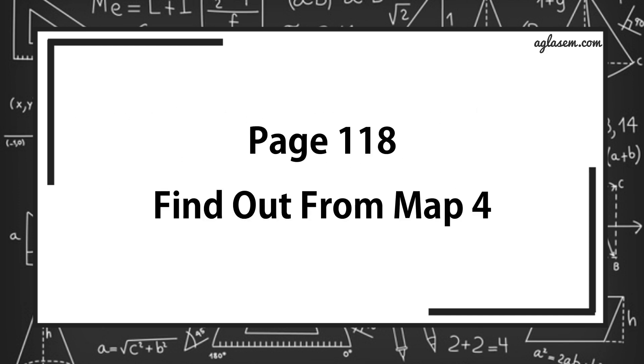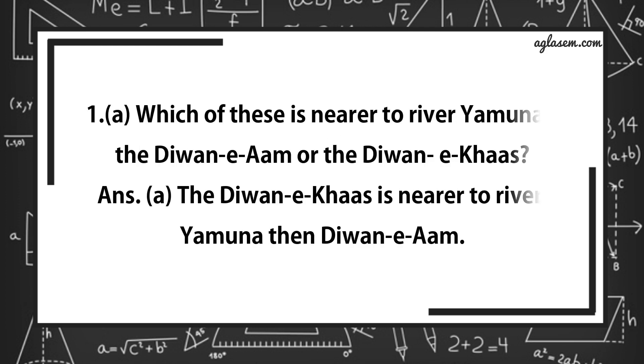Now turn to page number 118. Find out from map 4. Part 1 says, which of these is nearest to river Yamuna? The Diwan-E-Am or Diwan-E-Khas? Answer is, the Diwan-E-Khas is nearest to the river Yamuna than Diwan-E-Am.